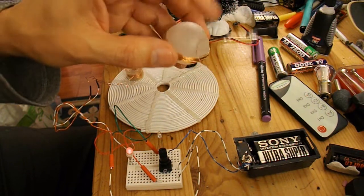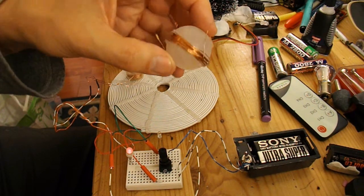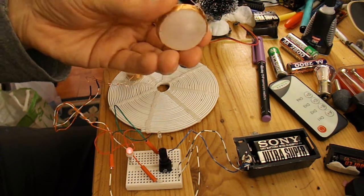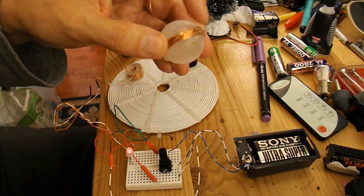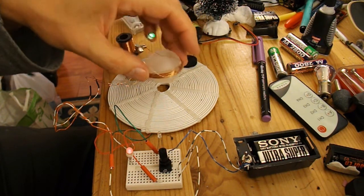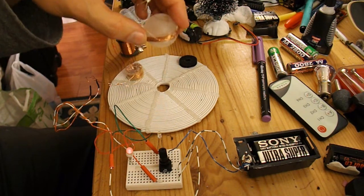This is actually the ball out of a roll-on deodorant and I've just wrapped some enameled wire around it. I think I put about 20 turns there. That comes on nicely.